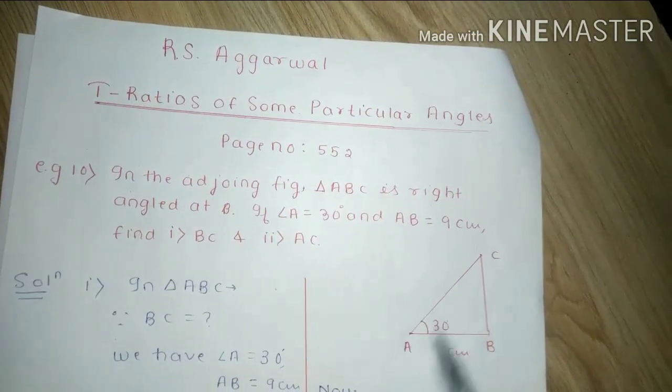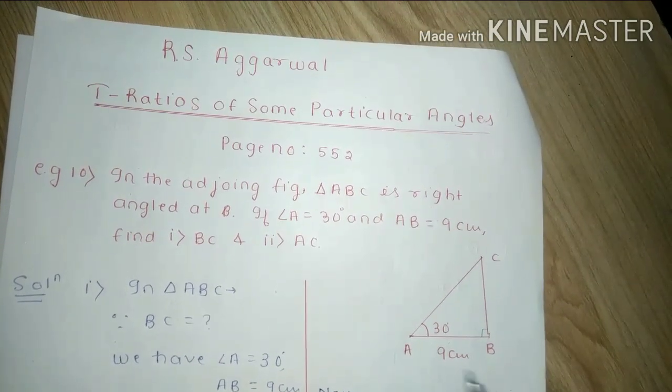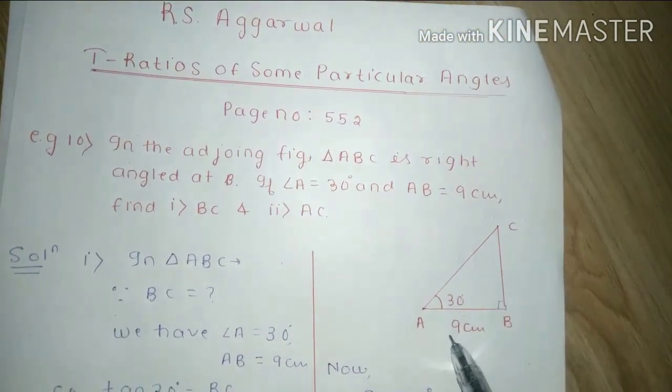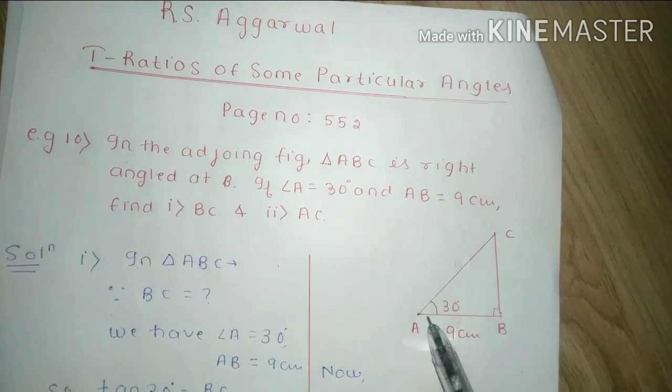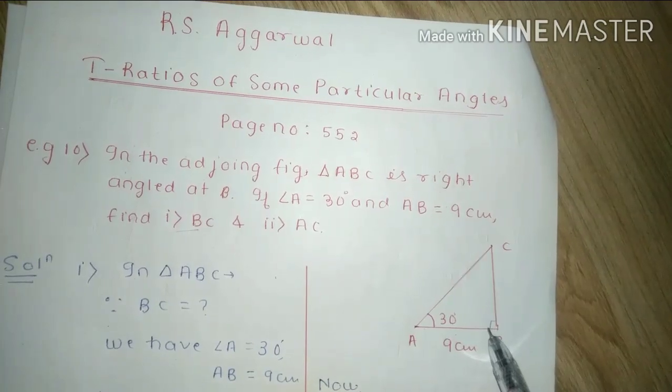I am saying that triangle ABC is right angle at B, B is 90 degrees, AB is 9 cm and angle A is equal to 30 degrees. We will find first BC is equal to what, and second find AC which is hypotenuse.